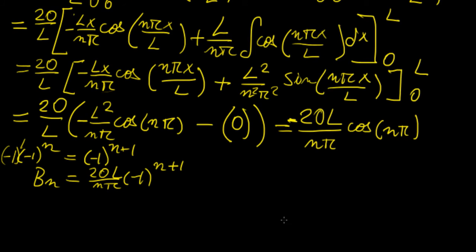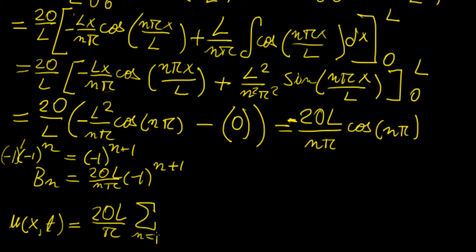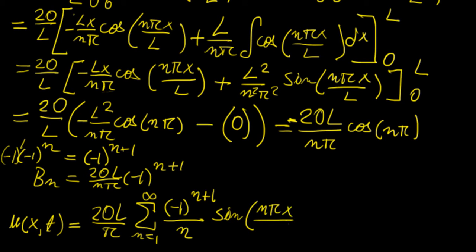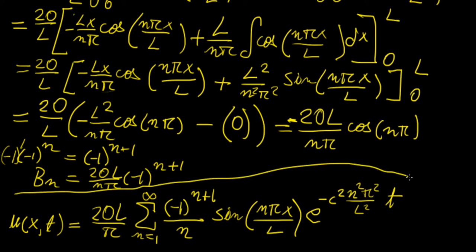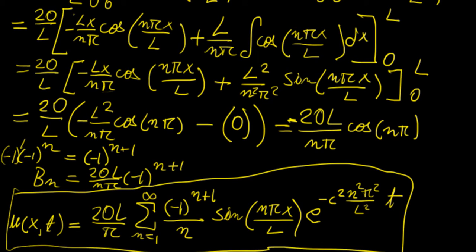Now that we have this, we can write our final particular solution. Taking the constants out, that's 20l over π, of the sum from n equals 1 to infinity of (−1)^(n+1) over n, times sine(nπx over l), times e to the power of −c²n²π² over l² times t. This is the final particular solution given those boundary conditions, with the Fourier coefficients now explicitly expressed.